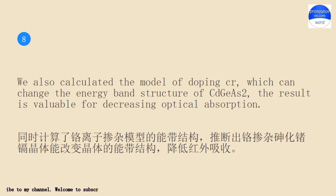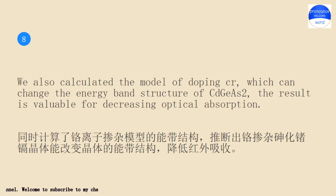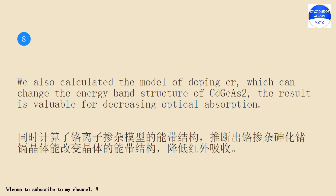We also calculated the model of doping Cr, which can change the energy band structure of CdS2, the result is valuable for decreasing optical absorption. We also calculated the model of doping Cr, which can change the energy band structure of CdS2, the result is valuable for decreasing optical absorption.